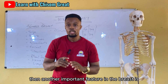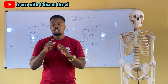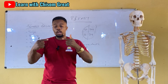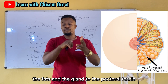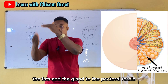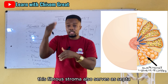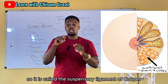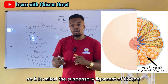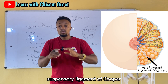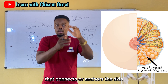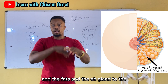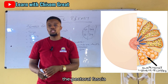Another important feature of the breast is the fibrous stroma that connects the skin, fat, and gland to the pectoral fascia. This fibrous stroma also serves as septa and is called the suspensory ligament of Cooper. It anchors the skin, fat, and gland to the pectoral fascia.